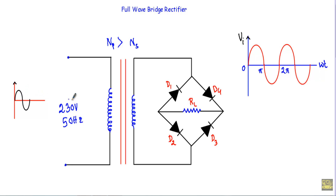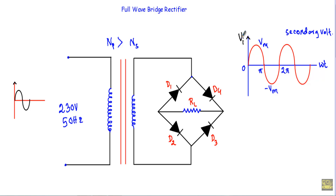The alternating voltage at the primary has a maximum value of 230 volts and a frequency of 50 Hz. This alternating voltage gets stepped down at the secondary side of the transformer. The secondary voltage has a maximum value of Vm and a minimum of minus Vm. This secondary voltage is applied across terminals A and B of the rectifier circuit.